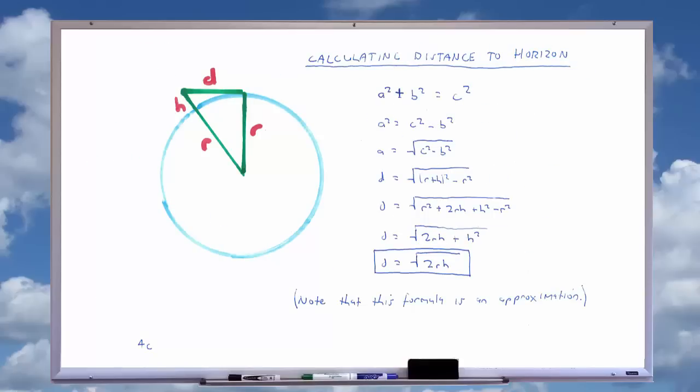To devise a suitable formula for calculating the obstruction, we also need to know how to calculate the distance between an observer and the horizon, taking into account the observer's height. The higher up the observer, the further away the horizon will be.